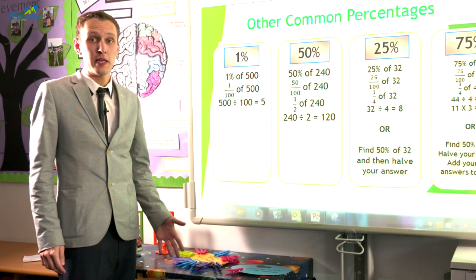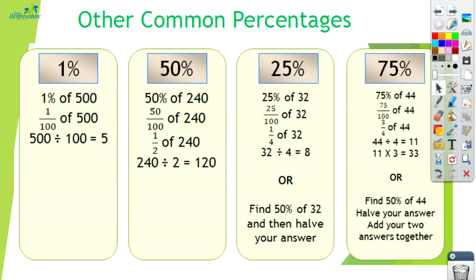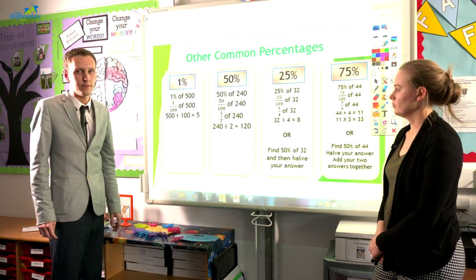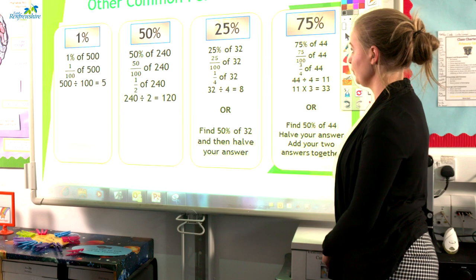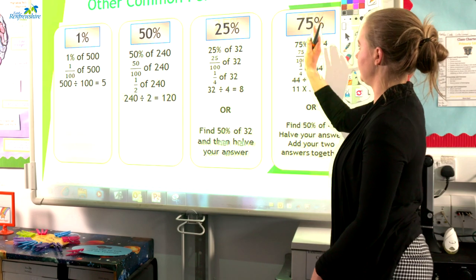As well as ten percent and twenty percent, there are some other percentages we would like children to have a good understanding of. For one percent: one percent of five hundred — one percent is the same as one out of a hundred, giving five hundred divided by a hundred which equals five. For fifty percent, children should relate it to fifty over a hundred which is one half. So one half of two hundred and forty: two hundred and forty divided by two equals one hundred and twenty. The other two common percentages at second level are twenty-five percent and seventy-five percent.